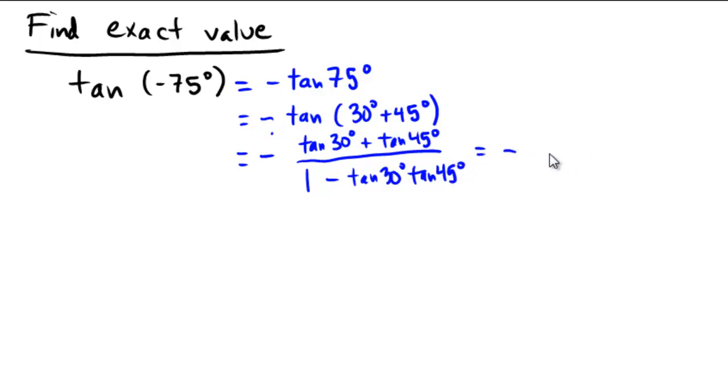So now we just have to know some of our unit circles. Tangent 30 degrees, that's the sine over the cosine, is 1 over radical 3. Then 45 degrees is just 1, tangent of that is 1. On the bottom we have 1 minus tangent of 30 is still 1 over radical 3, and tangent of 45 is still 1.